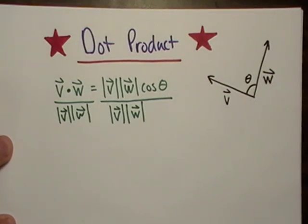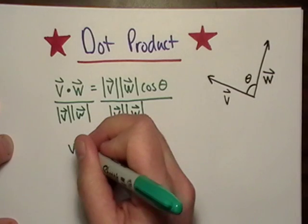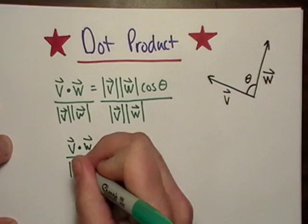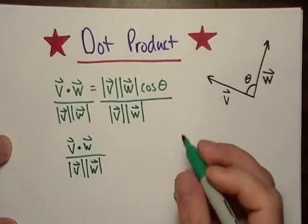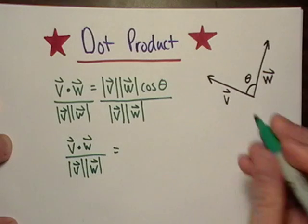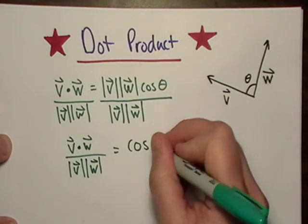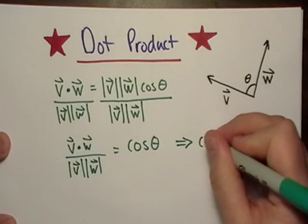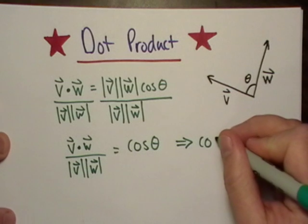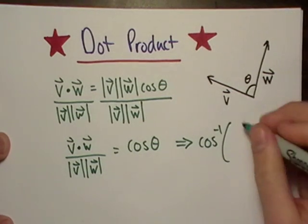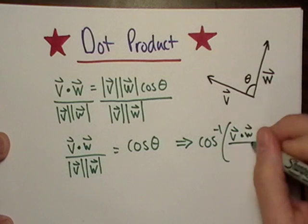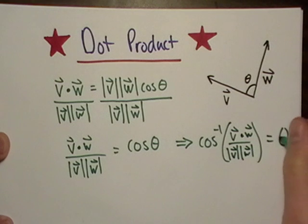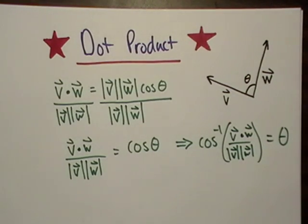If we go ahead and rearrange this and solve for one another, we find out that the dot product of two vectors divided by the magnitude of each one gives us cosine theta. Likewise, the inverse cosine of v dot w will give us the exact measure of the angle right there.